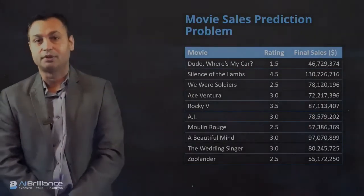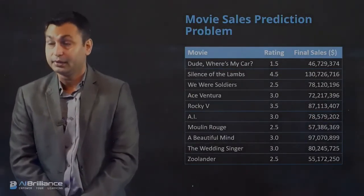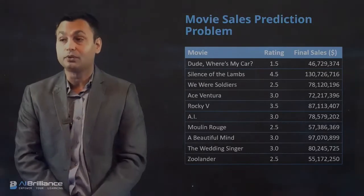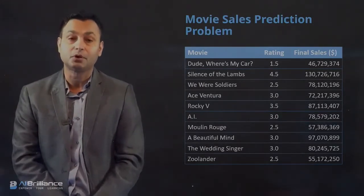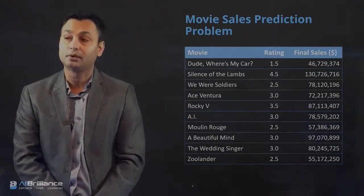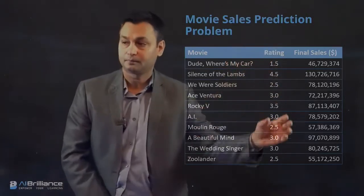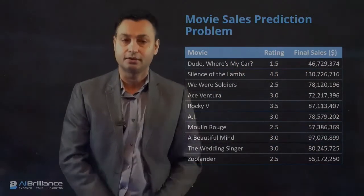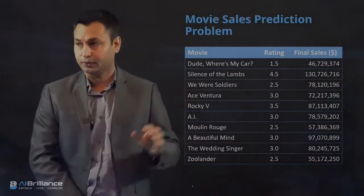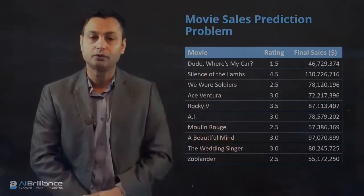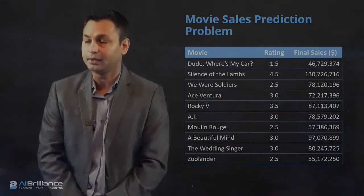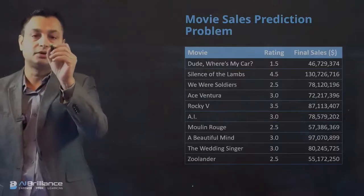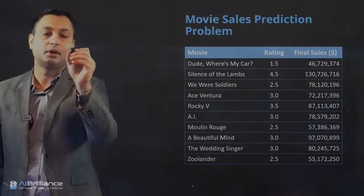Given that data, what we want to do is predict a model — a filter model — that, given a rating, tells us what will be the final sales of a new movie. We want to learn from this.